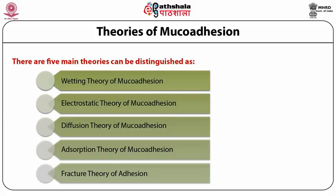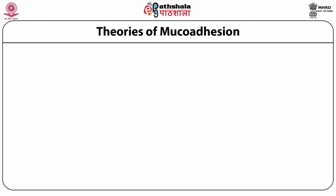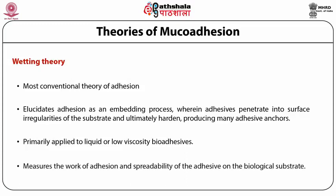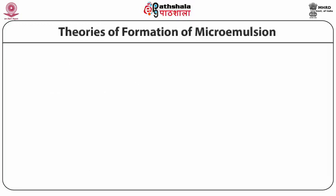The wetting theory is the most conventional theory of adhesion. It describes adhesion as an embedding process wherein bioadhesives penetrate into the irregularities of the biological substrate and eventually harden, resulting in exposure of the adhesion. It is primarily applicable to liquid bioadhesives or bioadhesives with low viscosity, and measures the work of adhesion and spreadability of the adhesive on the biological substrate.